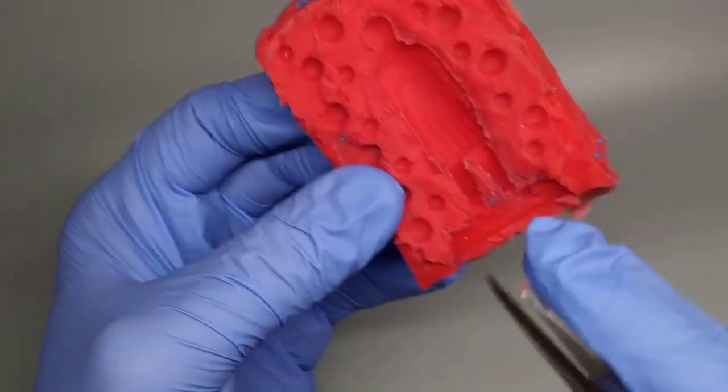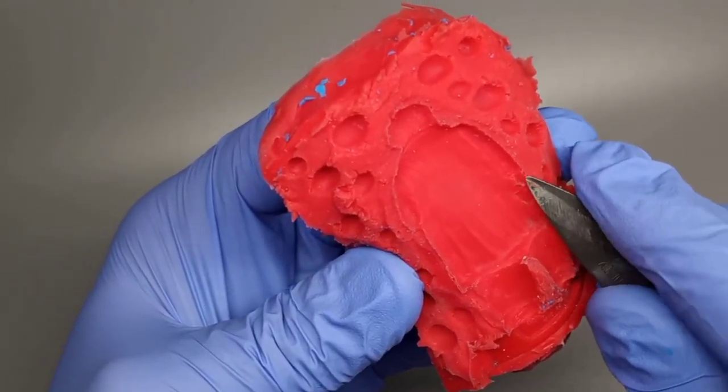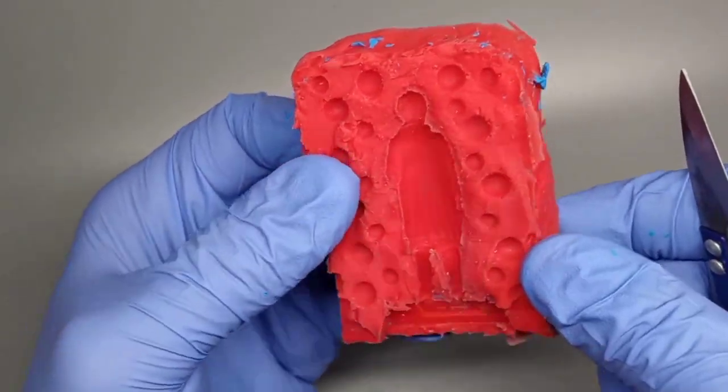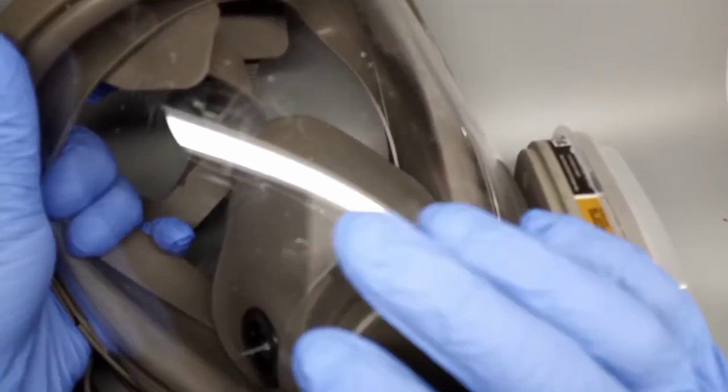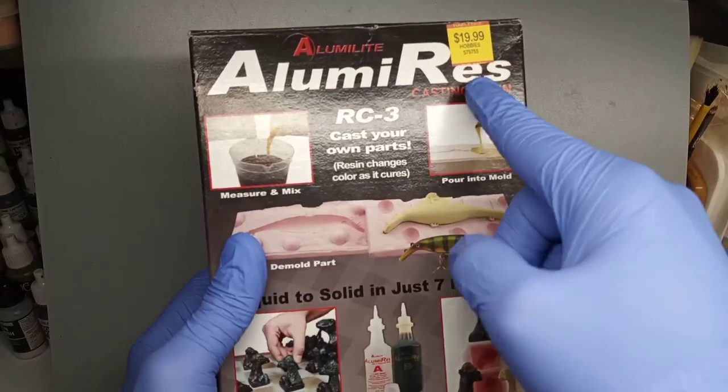Before you add any resin, inspect your mold and remove any excess material that might interfere with the final result. This step will make more sense as you practice with trial and error. A quick reminder to wear your safety gear before you start mixing this stuff.